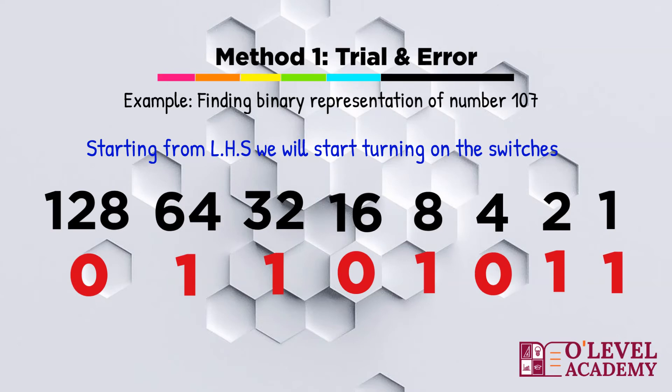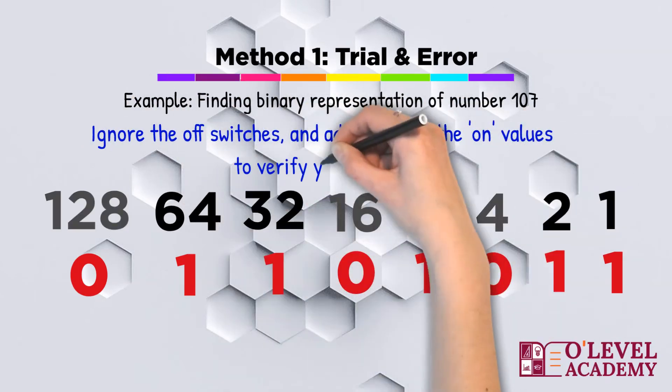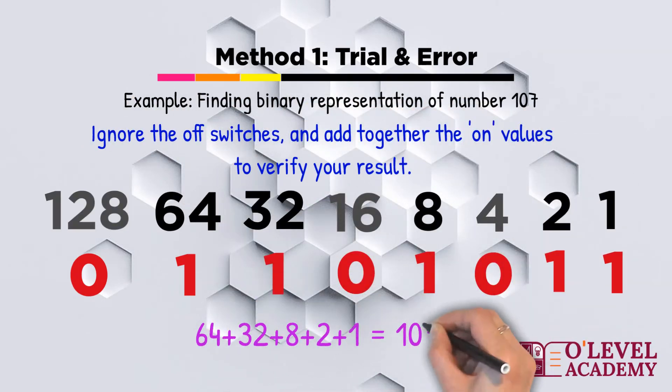It makes 104 which is less than 107 so we will turn ON switch with value 8. We will then check switch with value 4, 2, and 1 to check if you have converted the denary value to its correct binary representation. Ignore the OFF switches and add together the ON values to verify your result. 64 plus 32 plus 8 plus 2 plus 1 gives you 107, which means you have converted it the correct way.